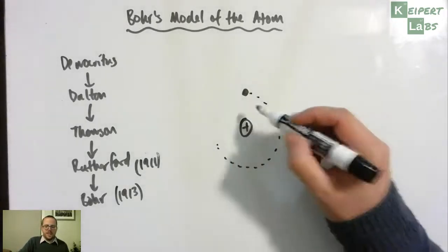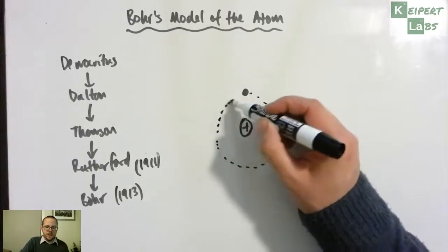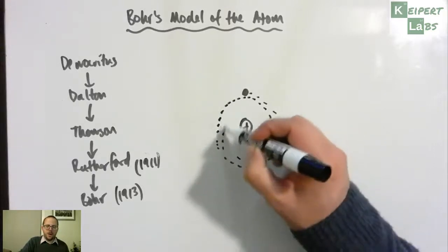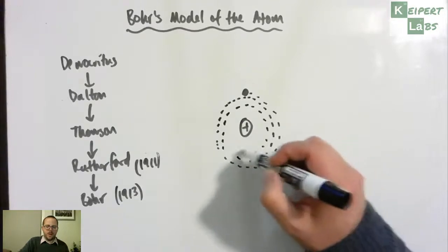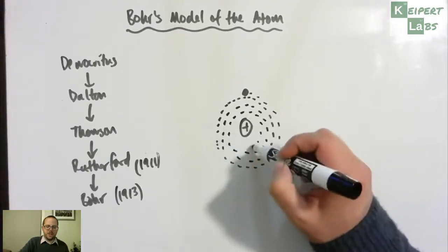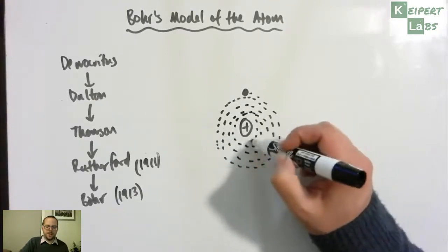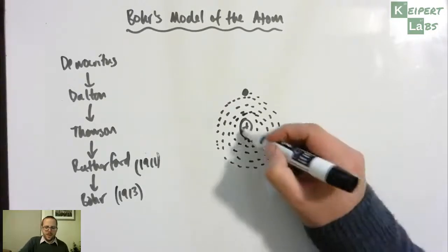What Bohr recognized was, because this is giving off energy as it goes around, it should actually spiral its way because it's attracted to the nucleus, it's an opposite charge to the nucleus, so it should be attracted towards the centre.